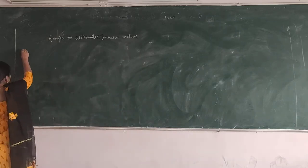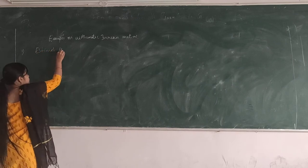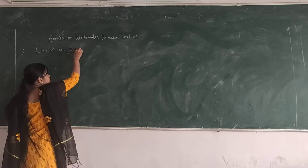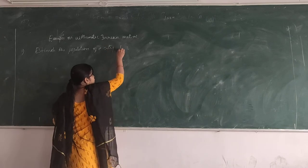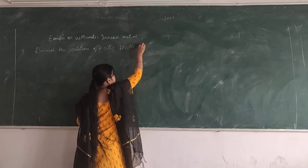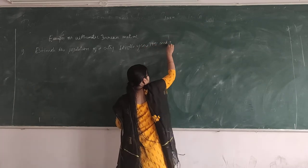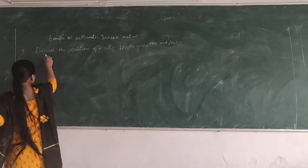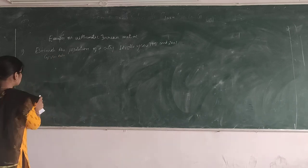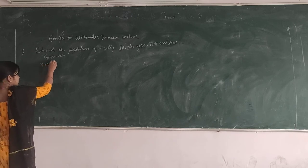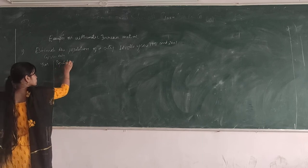Example 1: Estimate the population of the city for the years 1991 and 2001. The given data includes year and population in thousands.